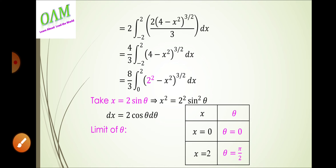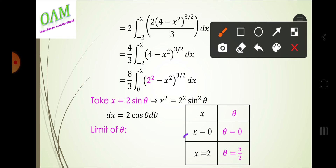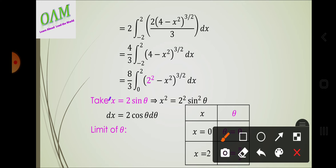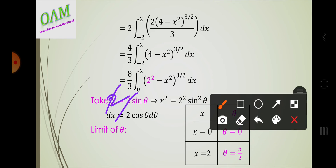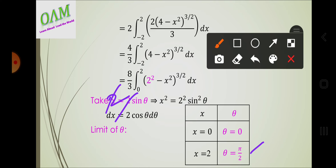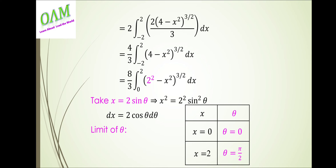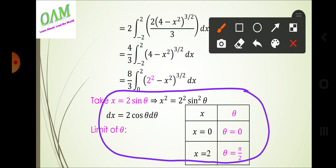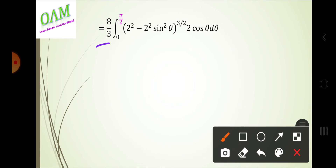For the limits: the lower limit is x = 0. Replacing: 2sinθ = 0, so sinθ = 0, giving θ = 0. The integral becomes: 2sinθ whole cubed times 2cosθ dθ.